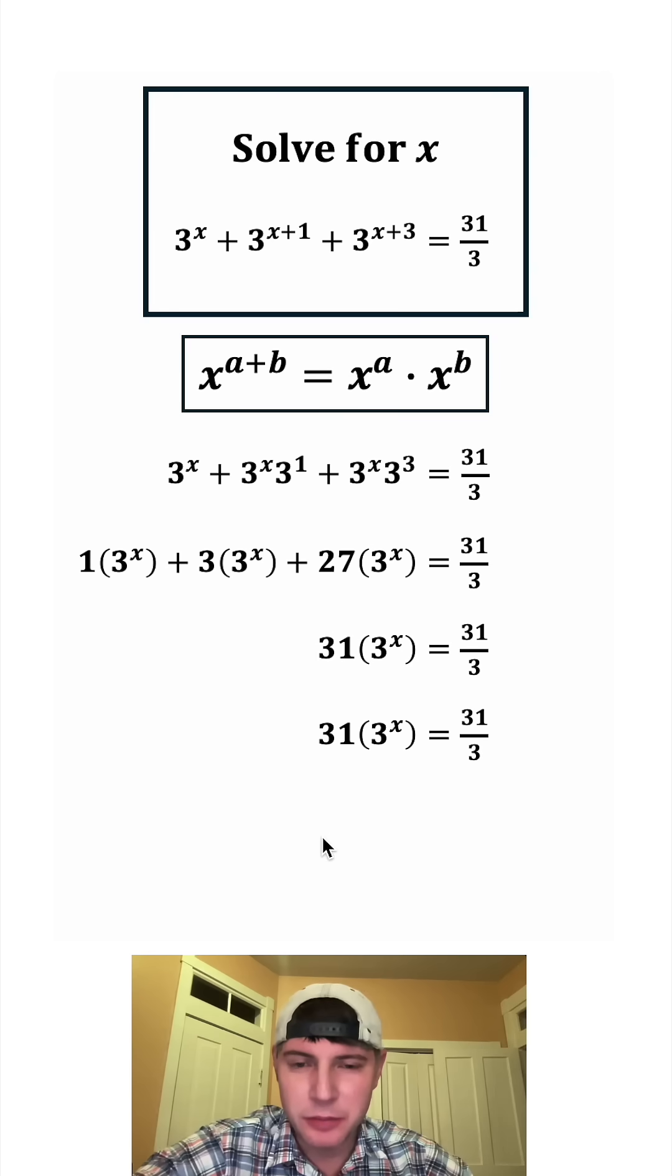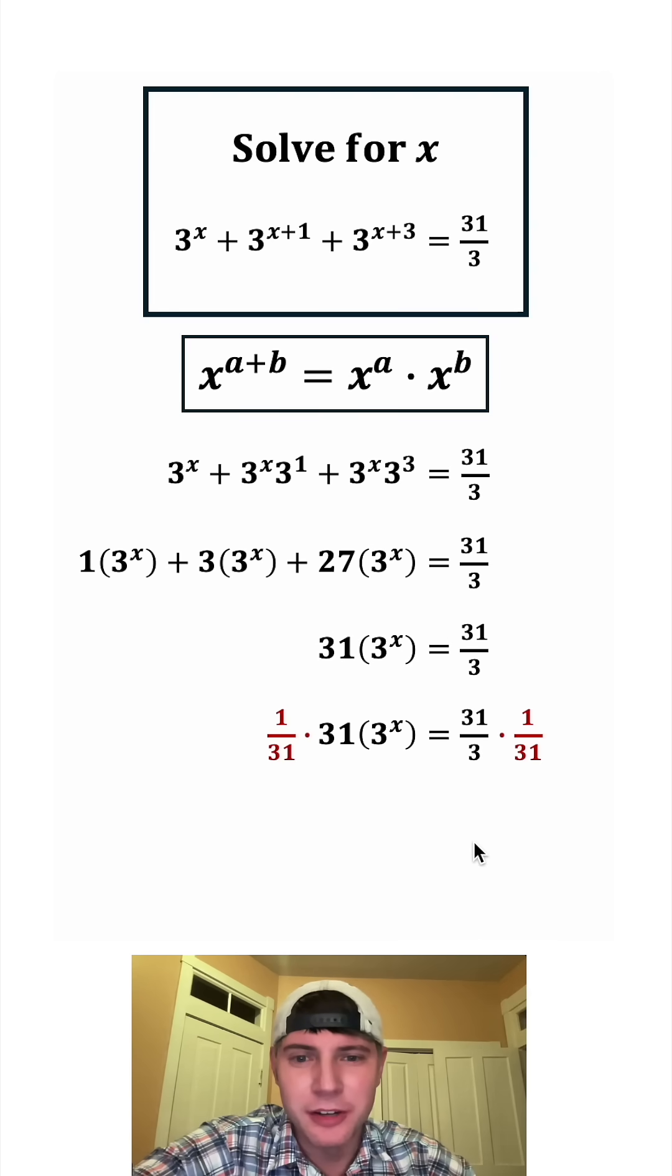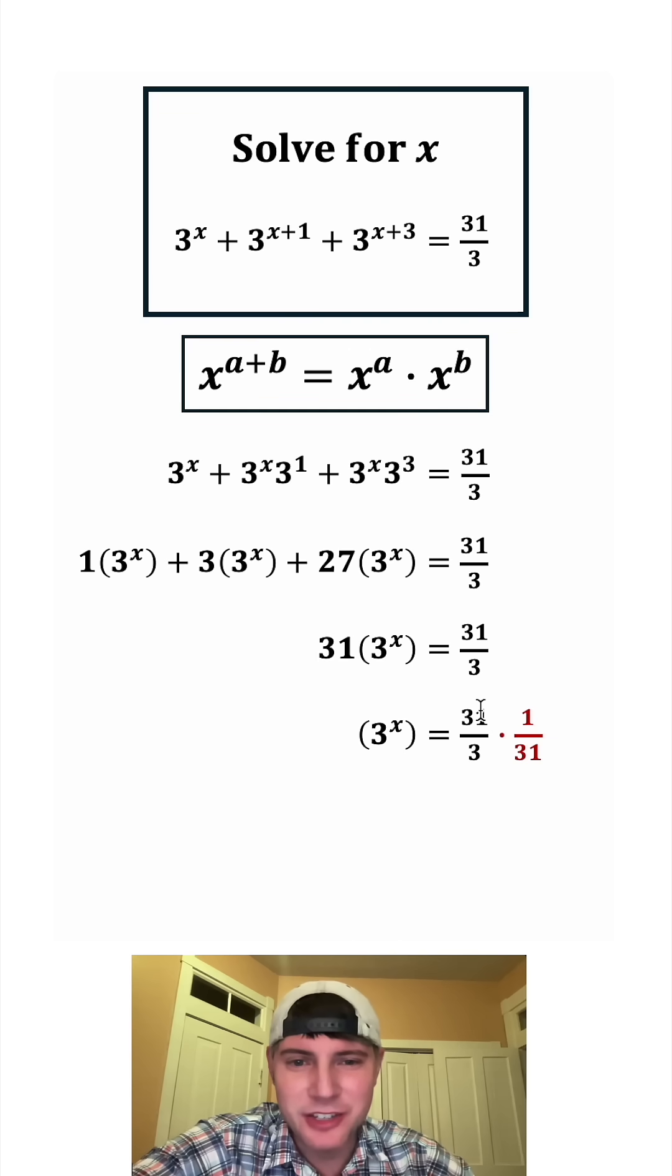And then next we can multiply both sides by 1 over 31. On the left hand side, this 1 over 31 and the 31 are going to cancel each other out. So we're left with 3 to the power of x. And on the right hand side, this 31 and this 31 will cancel each other out. And we'll be left with 1 third.